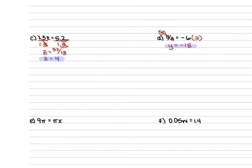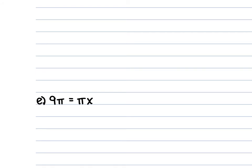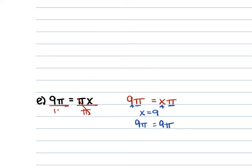For E, we have 9π is equal to π times x. You can observe that π appears on both sides and the only terms that differ are 9 and x. Since I'm solving for x, x must be 9. If you plug in 9, you get 9π equals 9π, which is exactly the same — they are equal, so x is 9. You could also divide each side by π, which cancels on both sides, confirming x equals 9.